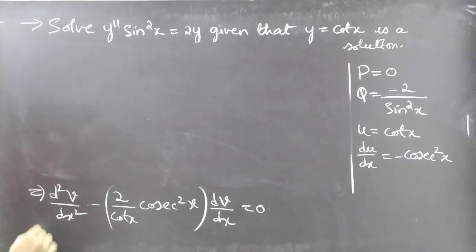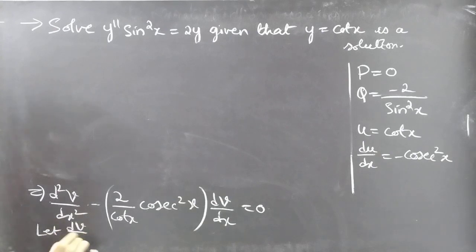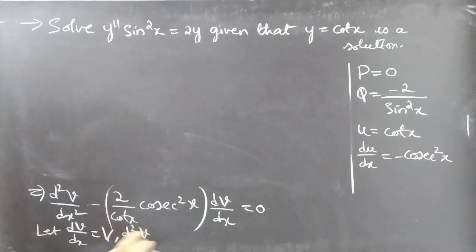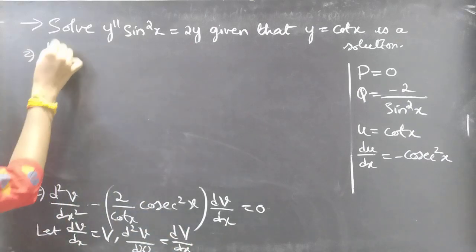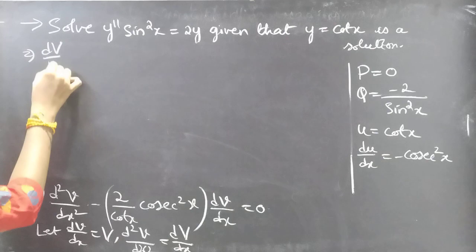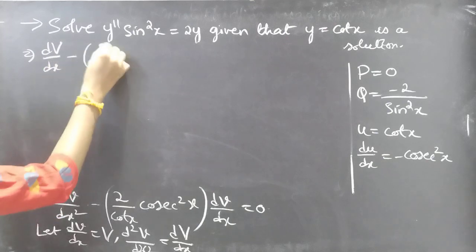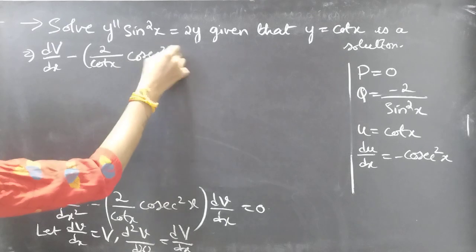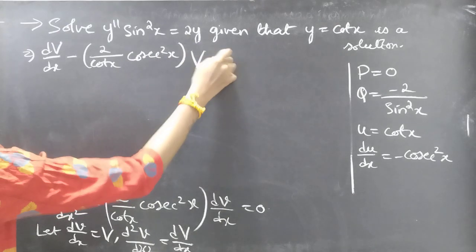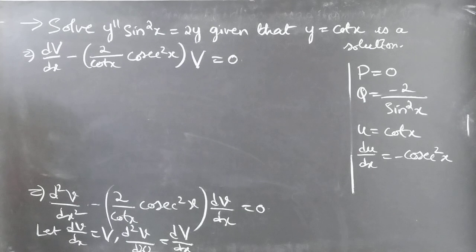Let dv/dx = V, then d²v/dx² = dV/dx. The equation becomes: dV/dx − (2cosec²x / cot x)·V = 0.